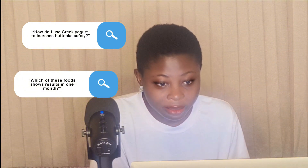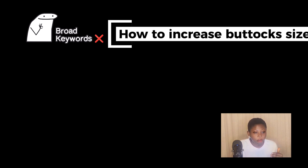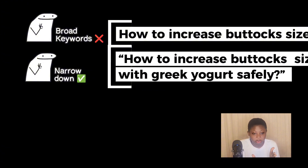Viewers then narrow their queries to find actionable, specific advice — they might ask 'which of these foods shows results in one month?' or 'how do I use Greek yogurt to increase buttocks safely?' Those long-tail keywords and specific queries are less competitive and easier to rank for. So instead of targeting the broad keyword 'how to increase buttocks size,' you can narrow to a focused angle like 'how to increase buttocks size with Greek yogurt.'